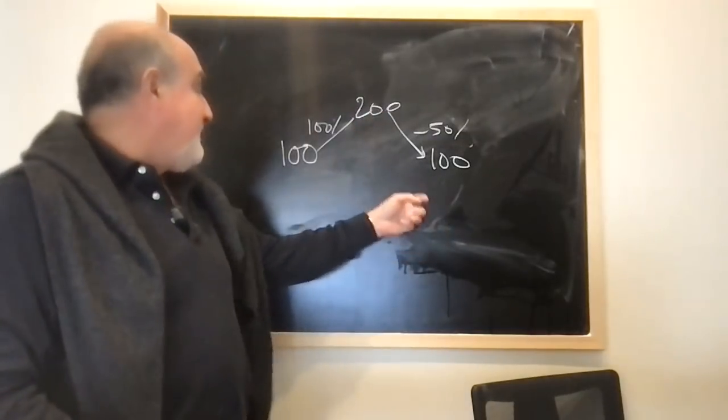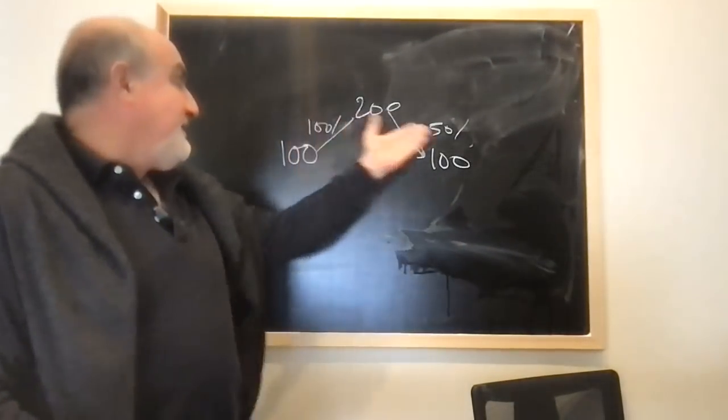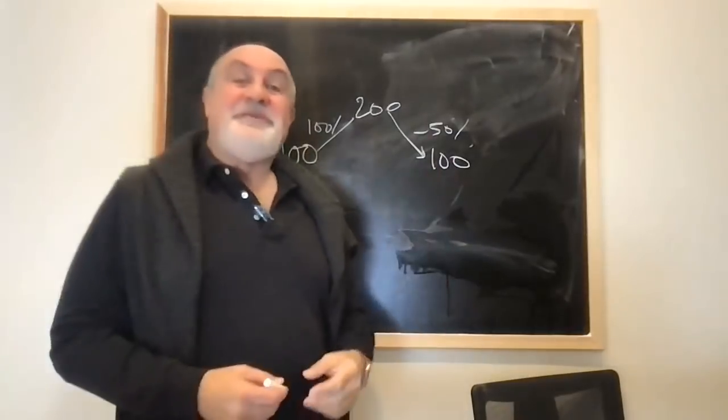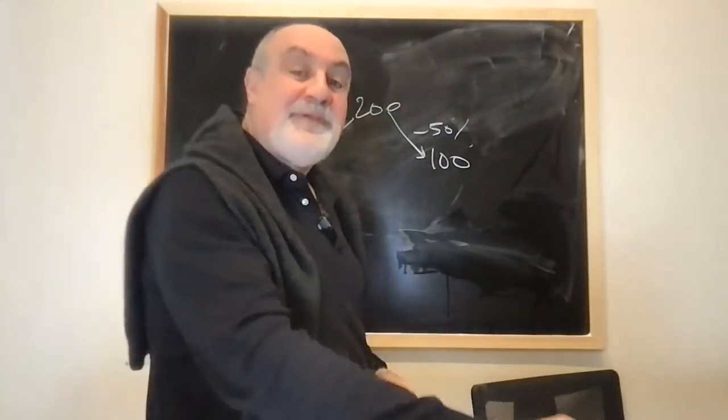And this went down 100%, go to zero. So you start with 100, ends up at zero with flat returns. No, you cannot add up percentages or compare them. What do you do?